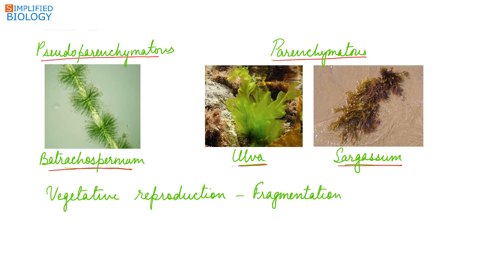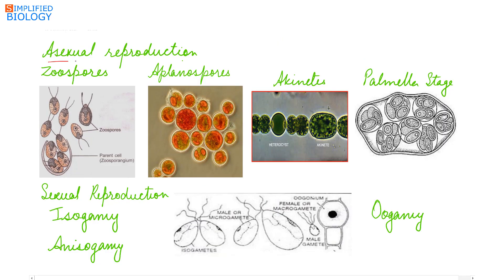Reproduction: vegetative reproduction takes place by fragmentation — if any part of the thallus separates, it can divide and form a new plant. Asexual reproduction takes place by zoospores, aplanospores, akinetes, and palmella stage. Zoospores are motile spores. Aplanospores are non-motile spores. Akinetes are resting spores — under unfavorable conditions the protoplasm contracts and gets surrounded by a thick wall with plenty of reserved food.